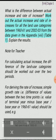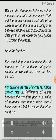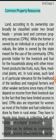Activity: What is the difference between actual increase and rate of increase? Work out the actual increase and rate of increase for all the land use categories between 1960-61 and 2002-03 from the data given in Appendix B, Table 1. Explain the results. For calculating actual increase, the difference of the land use categories should be worked out over the two periods. For deriving the rate of increase, simple growth rate — i.e., difference of values between the two time points divided by the base year (1960-61) value — should be used.